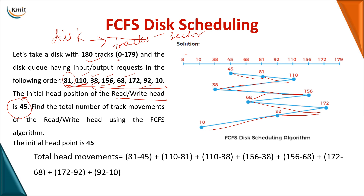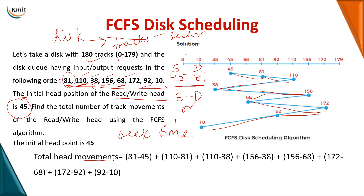When performing this operation, we calculate the total head movements, also called seek time — the amount of time required to perform these operations. For the first request, the initial head is at 45 and the next request is 81. You subtract these values: source minus destination or destination minus source — you can take either value.